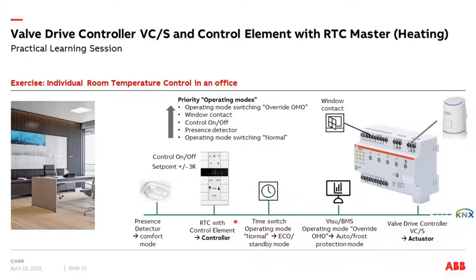With frost protection mode it overwrites everything in the city settings. Here is an overview of the priorities. The lowest priority is the group object operating mode switch normal, simulated by a time switch. The next higher priority is the presence detector — room occupied or not. Next higher is controller on and off via rocker. Then the window contact has even higher priority. When the controller is on and someone opens the window, the window contact takes priority and the room controller goes into frost protection mode. The highest priority is the operating mode override group object, simulated by a visualization or BMS system.